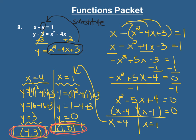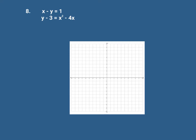If you take these points and substitute them back into the original equations, they should check. For example, with (4, 3): 4 minus 3 equals 1 ✓, and in the second equation 3 minus 3 is 0, and 4 squared minus 4 times 4 is also 0 ✓. The same thing with (1, 0) checks as well.